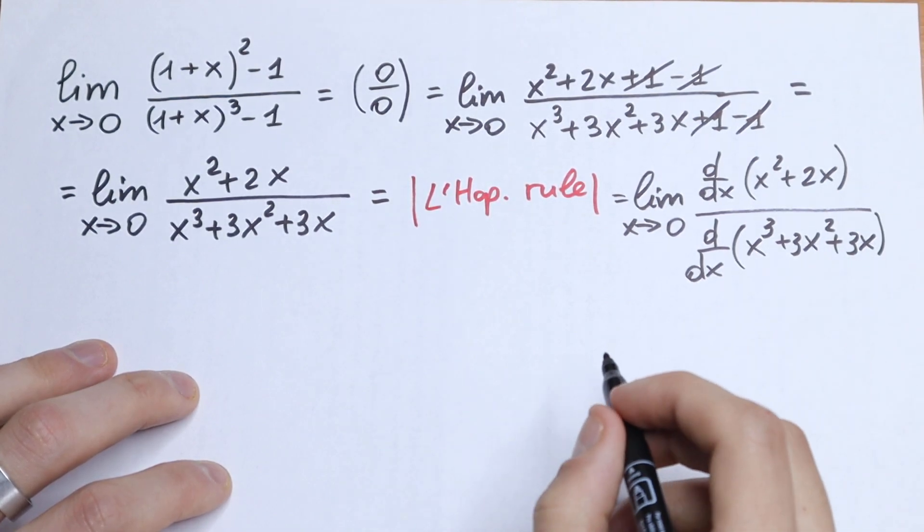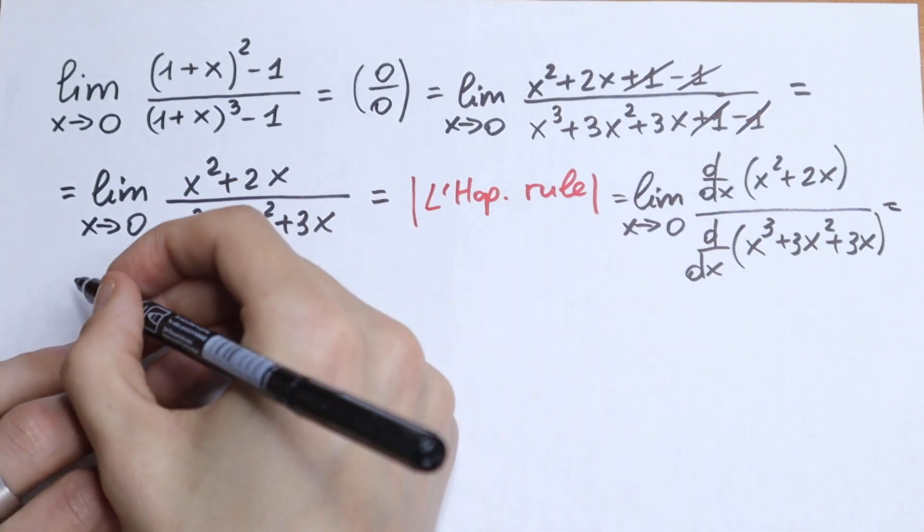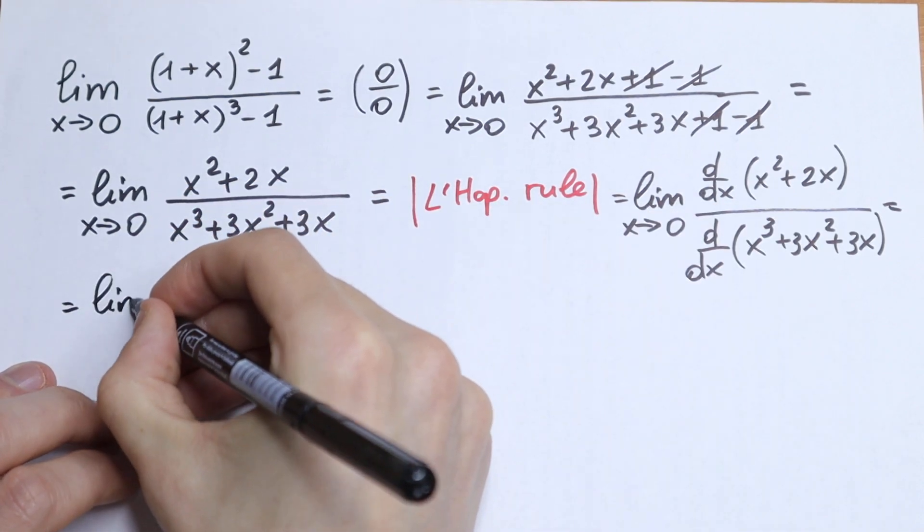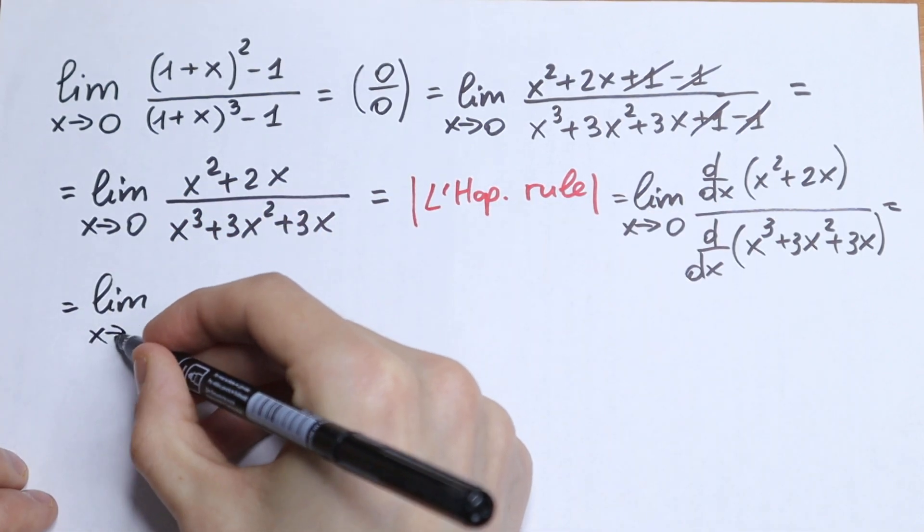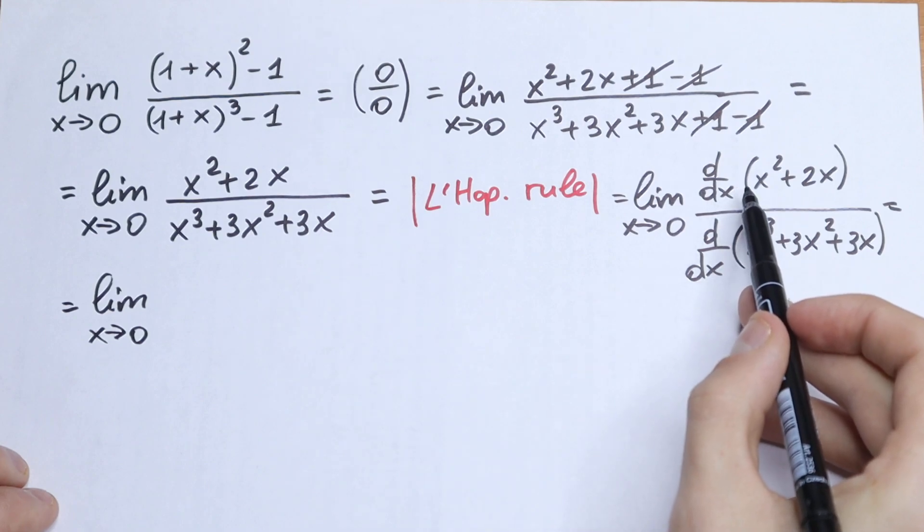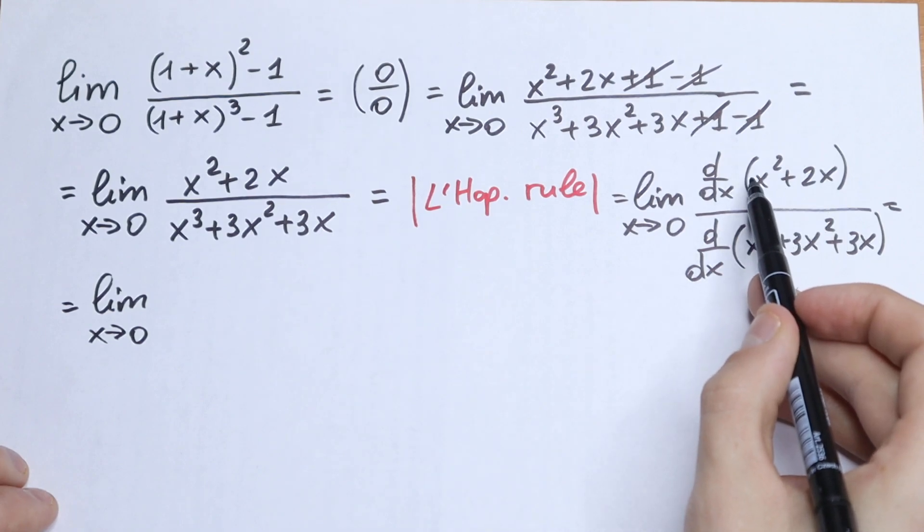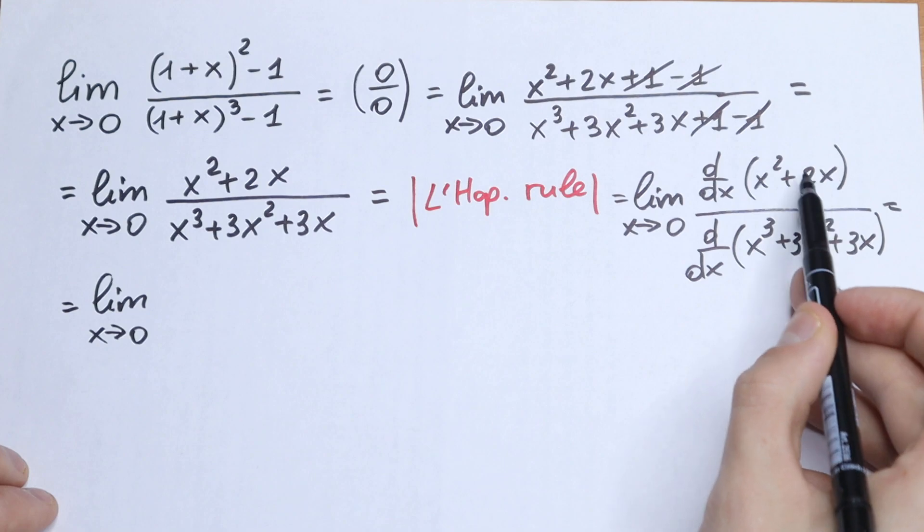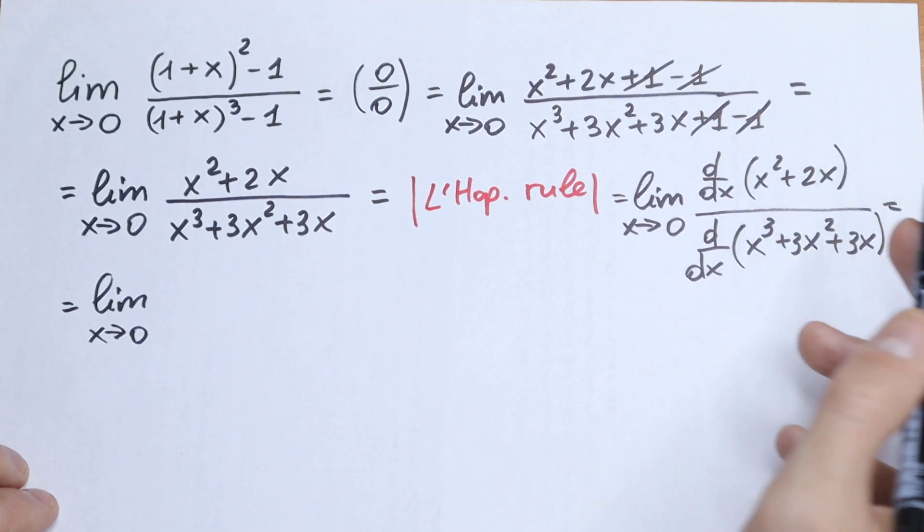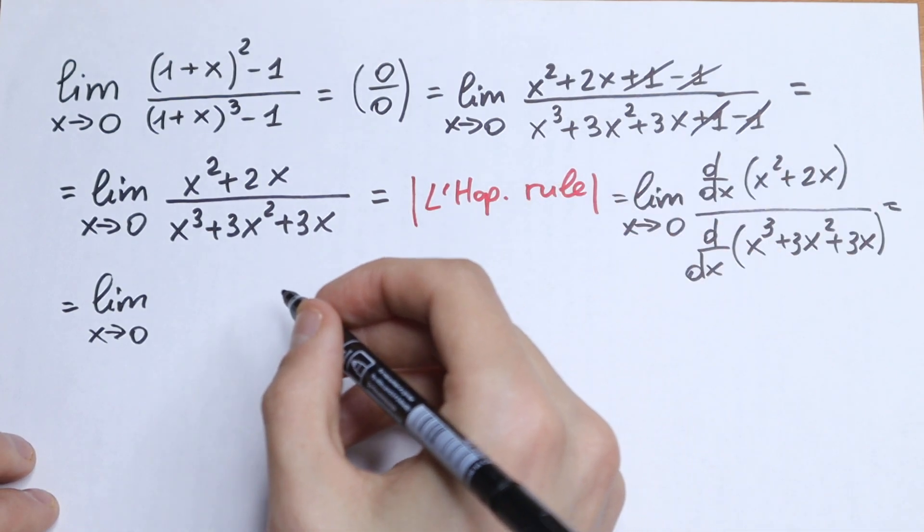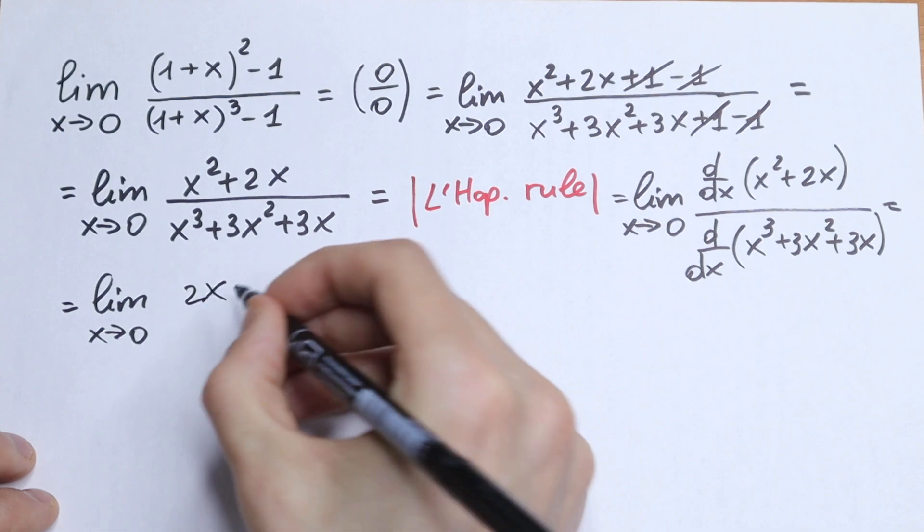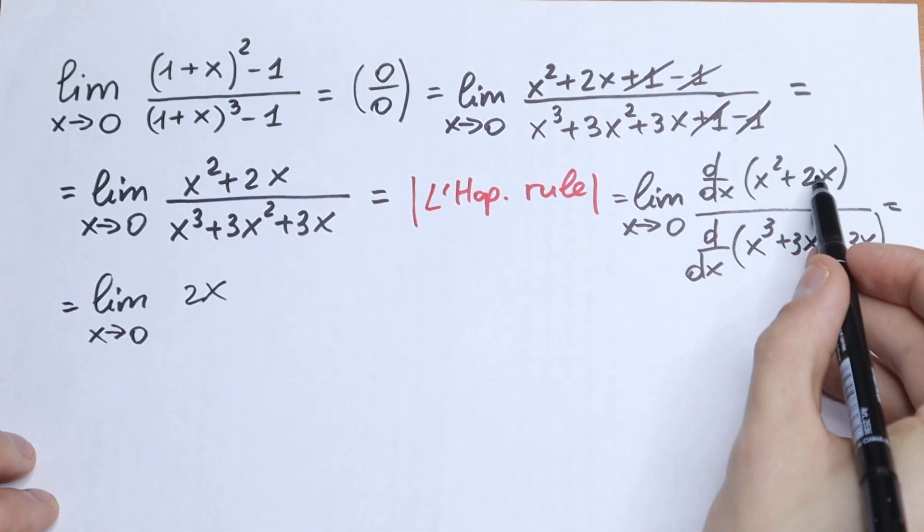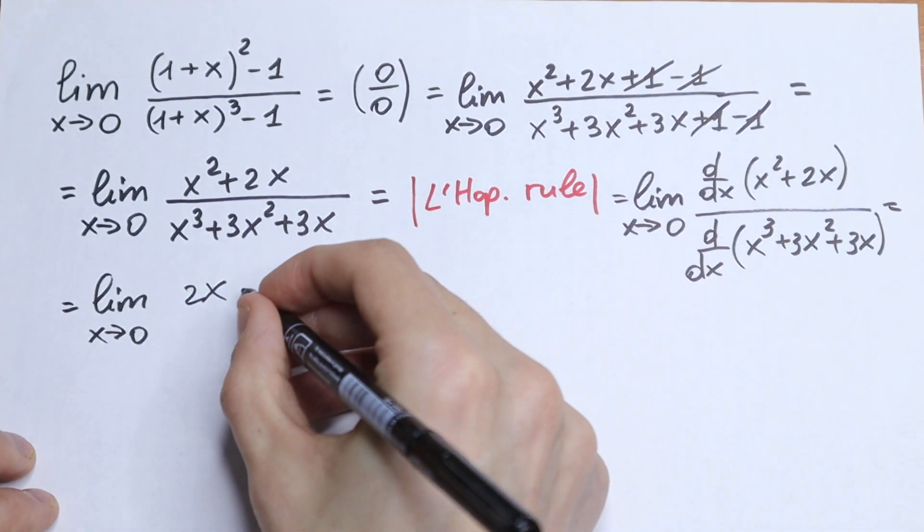This will be equal to the limit as x approaches 0. The derivative of our numerator will be 2x + 2.